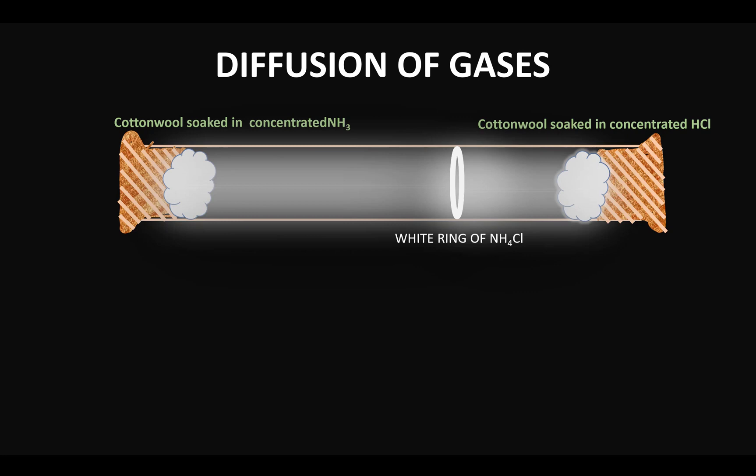I have shown this to you so that you understand that there are two gases which are diffusing from the opposite ends toward each other, and that is resulting in the formation of this compound. Technically, both these gases are colorless gases. So that answers your first question